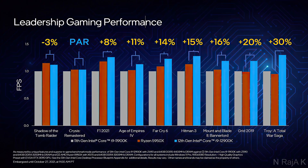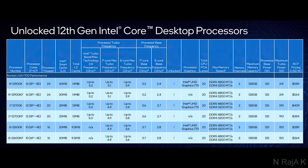Regarding gaming performance: comparing the last gen Intel processor and the latest top-end Ryzen processor against the new 12th Gen launch, the results show the 12th Gen is roughly plus or minus a few percent compared to Ryzen, with some games being equal.